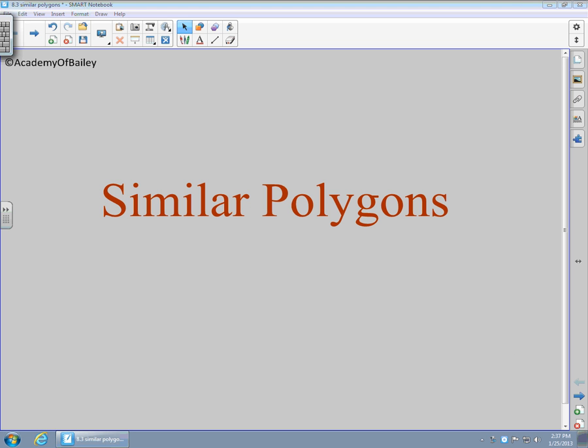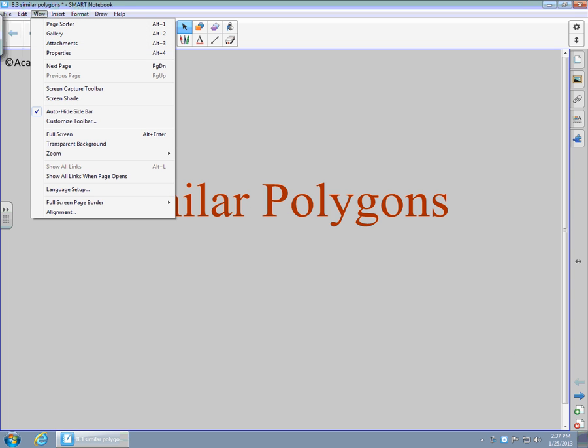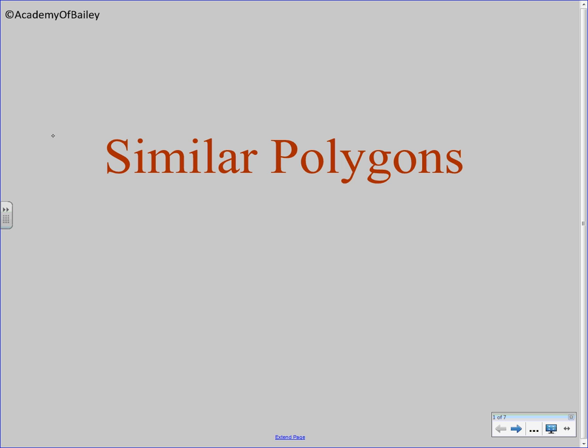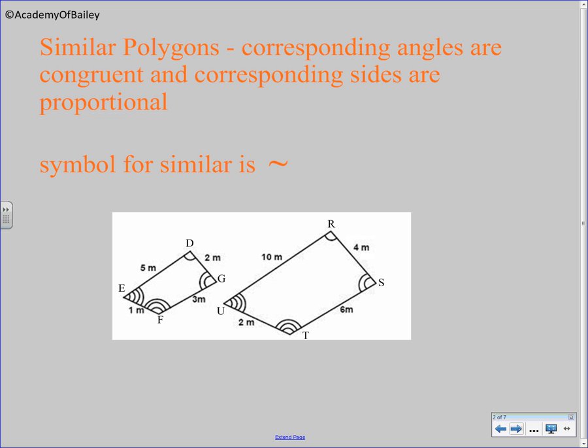Hey, welcome to our lesson on similar polygons. Similar polygons are corresponding... Similar polygons have their angles, their corresponding angles... Let me try this again here. Similar polygons corresponding angles are congruent and corresponding sides are proportional.